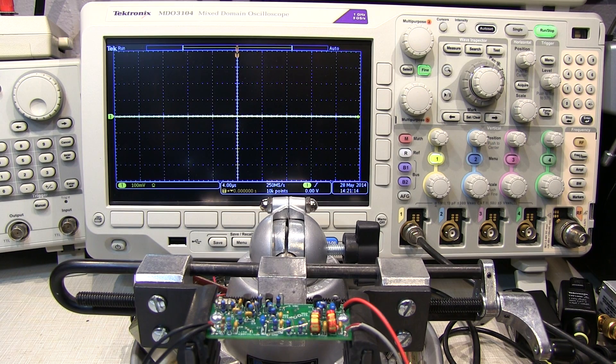In this video, I'm going to show a simple way of measuring the frequency response of an HF bandpass filter using this MDO3000.